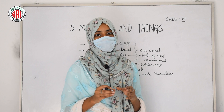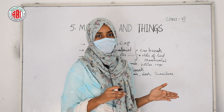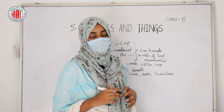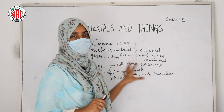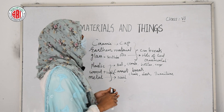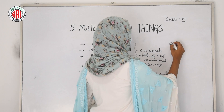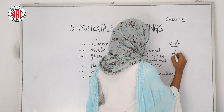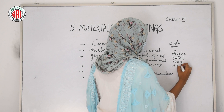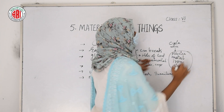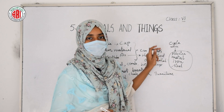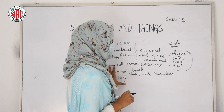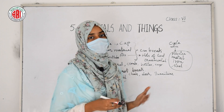By these examples we understand that each material can be used to make different objects. One material can be used to make many different things used in our daily life. We'll take one more example: a cycle. A cycle is made up of different materials like plastic, metal, iron, and steel. In this way, a number of different materials can be used to make one single thing.